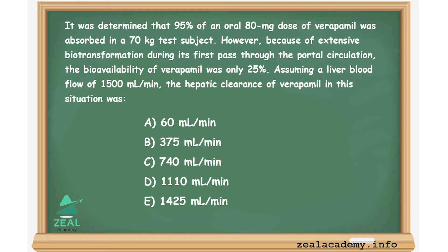Assuming a liver blood flow of 1500 ml per minute, the hepatic clearance of verapamil in this situation was: a) 60 ml per minute, b) 375 ml per minute, c) 740 ml per minute, d) 1110 ml per minute, or e) 1425 ml per minute.